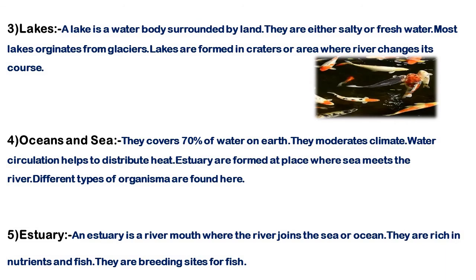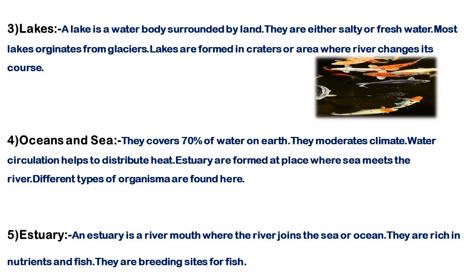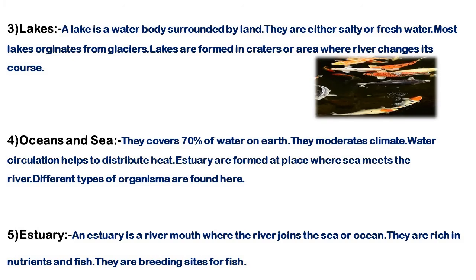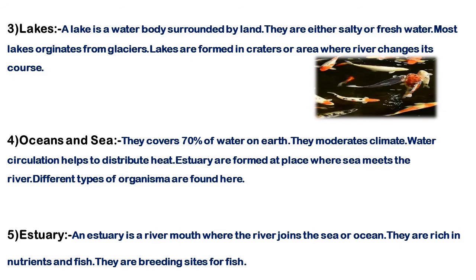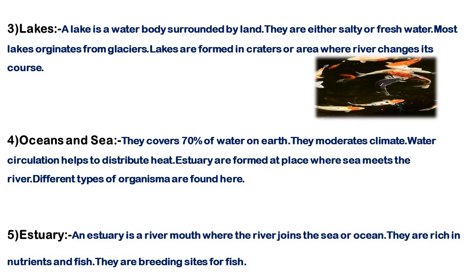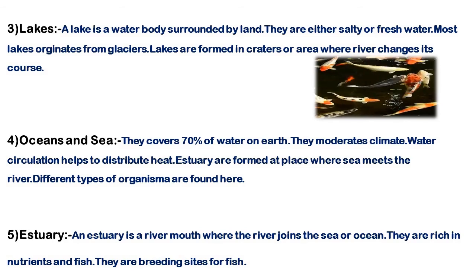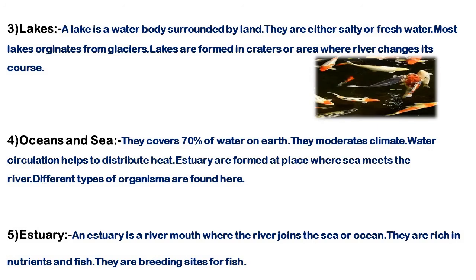Oceans and seas — 70% of the Earth's surface is a water ecosystem. This is an estuary. Estuary means it is a meeting place of river and sea — the river mouth where the river joins the sea or ocean. The estuary is a breathing area for many aquatic animals. River mouth is an estuary.